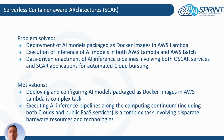The motivation is that deploying and configuring AI models packaged as Docker images in AWS Lambda is a complex task, because you need to package all the dependencies within the same Docker container, define an entry point, and configure a source of events to trigger the execution of the function. Executing inference pipelines along the computing continuum, including both clouds and public FaaS services, is also complex due to different hardware resources, computer architectures, APIs, and technologies.